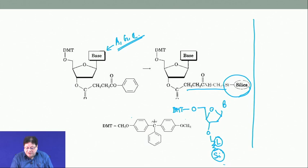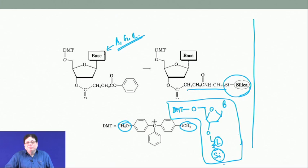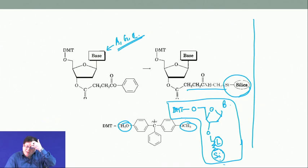The 5-prime OH is protected as a DMT group — the dimethoxytrityl group. Trityl is the triphenylmethyl group, and in this case there are two OCH3 groups, so it is called dimethoxytrityl. This starting nucleoside with DMT-protected 5-prime OH and base protection can be purchased from chemical companies.